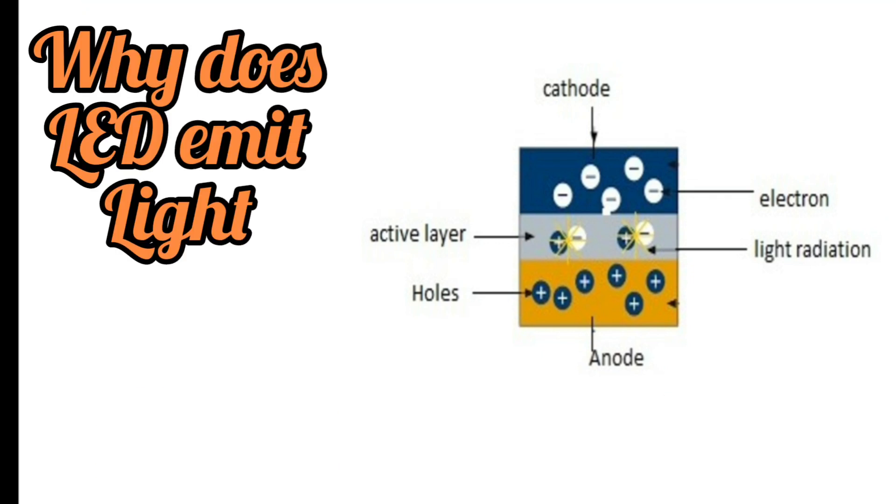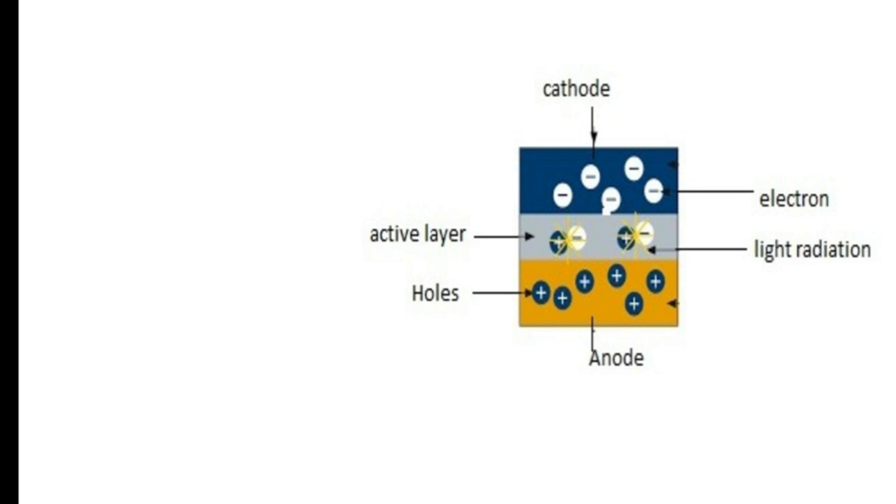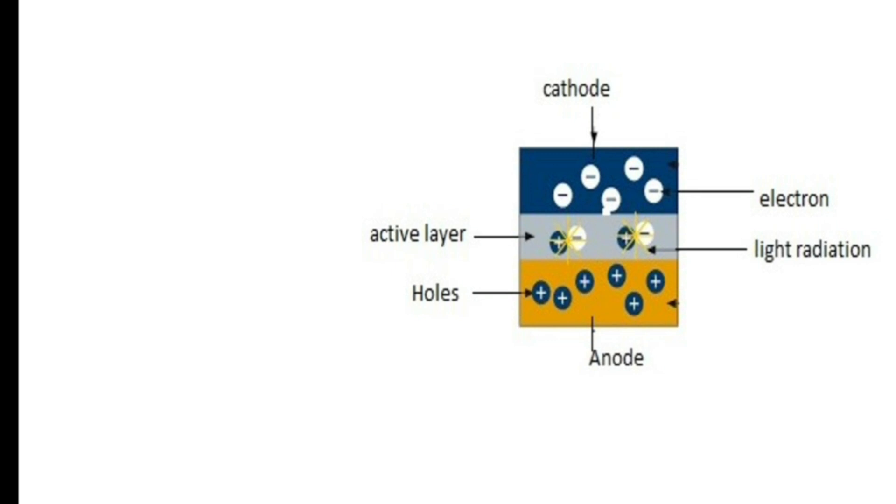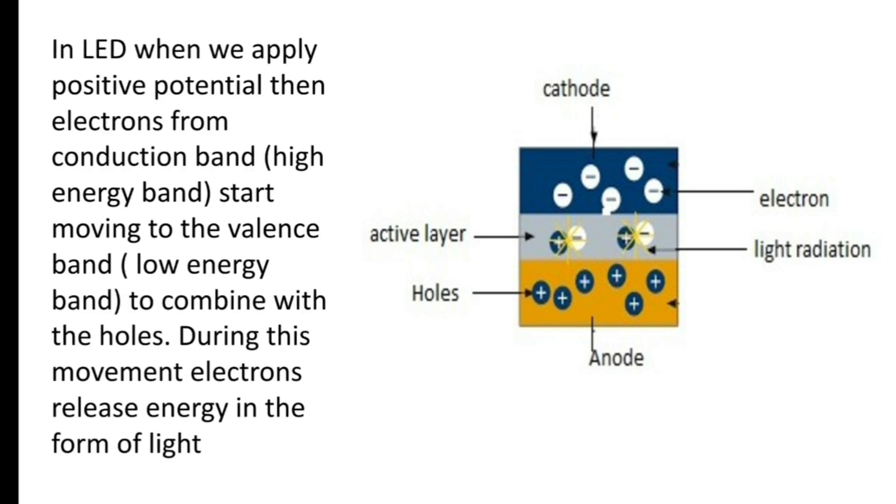Now, we will see why LED emit light. This is the internal structure of an LED. One side is cathode that is having excess of electrons and other side anode having deficiency of electrons.